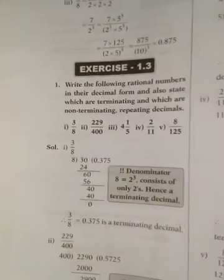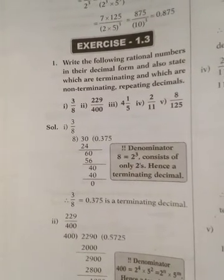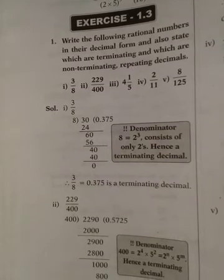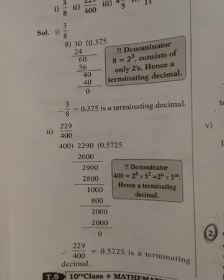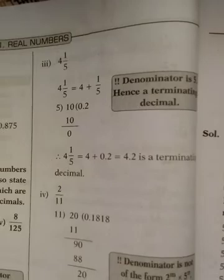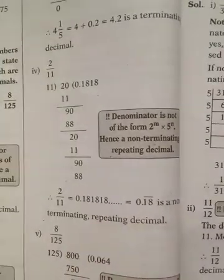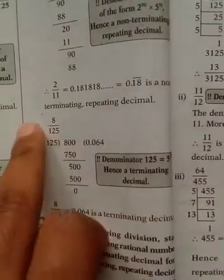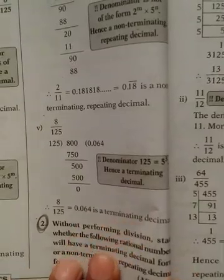The first question asks to write the following rational numbers in decimal form and state which are terminating and which are non-terminating repeating decimals. There are five parts. The first solution is 1/3 by 8. You can pause the video and write down your notes. Here is the second, third, fourth, and fifth answer for question one.